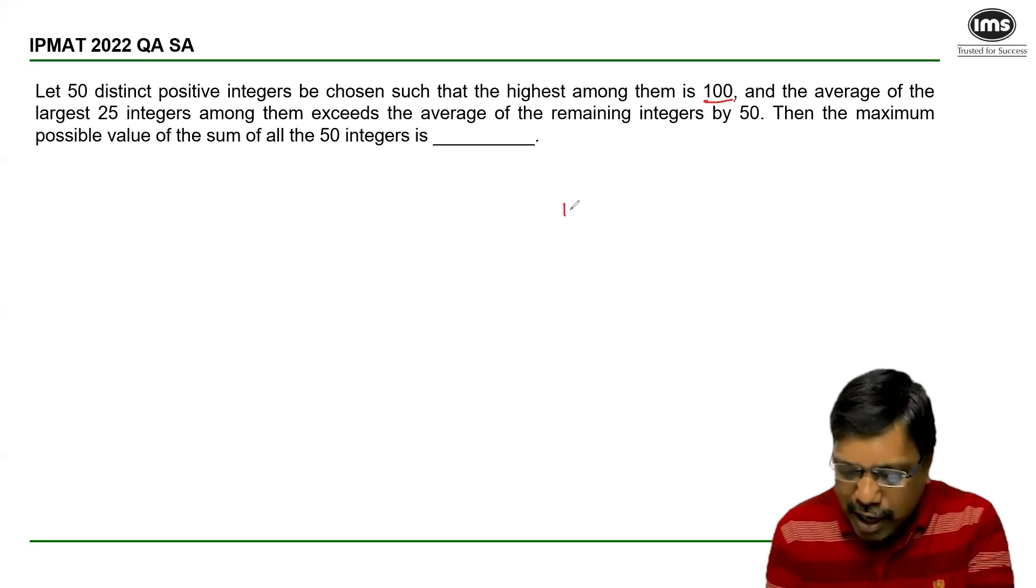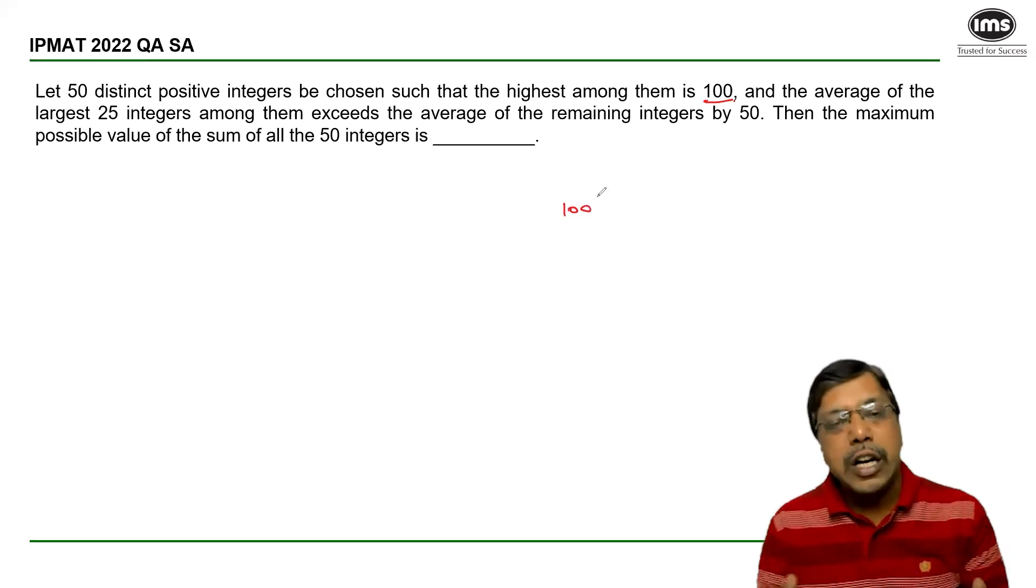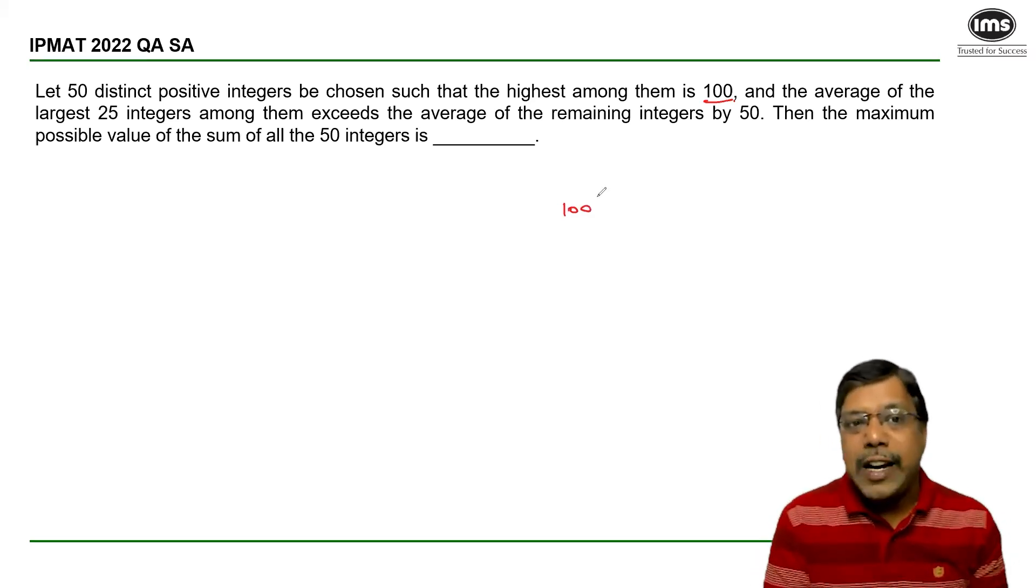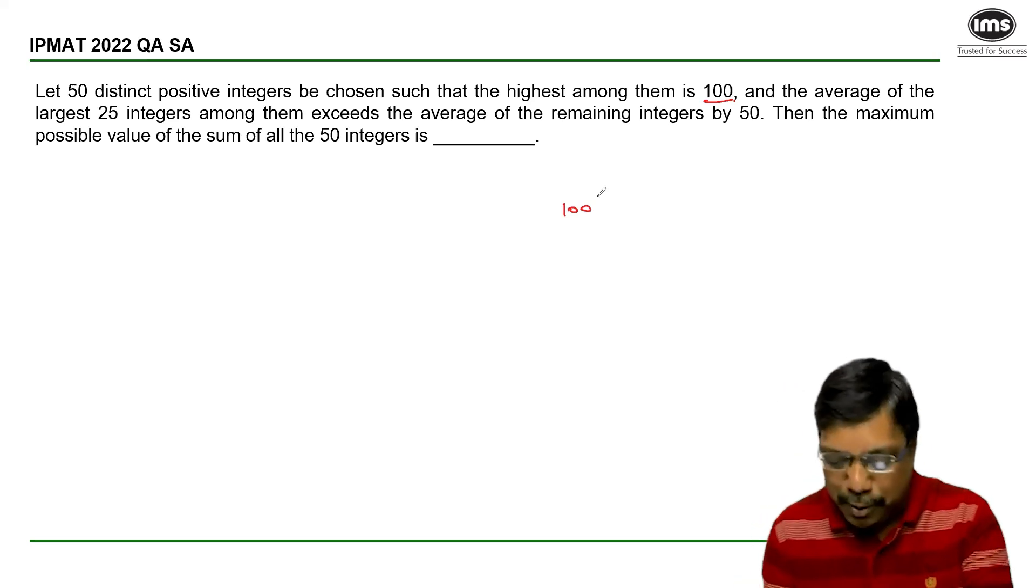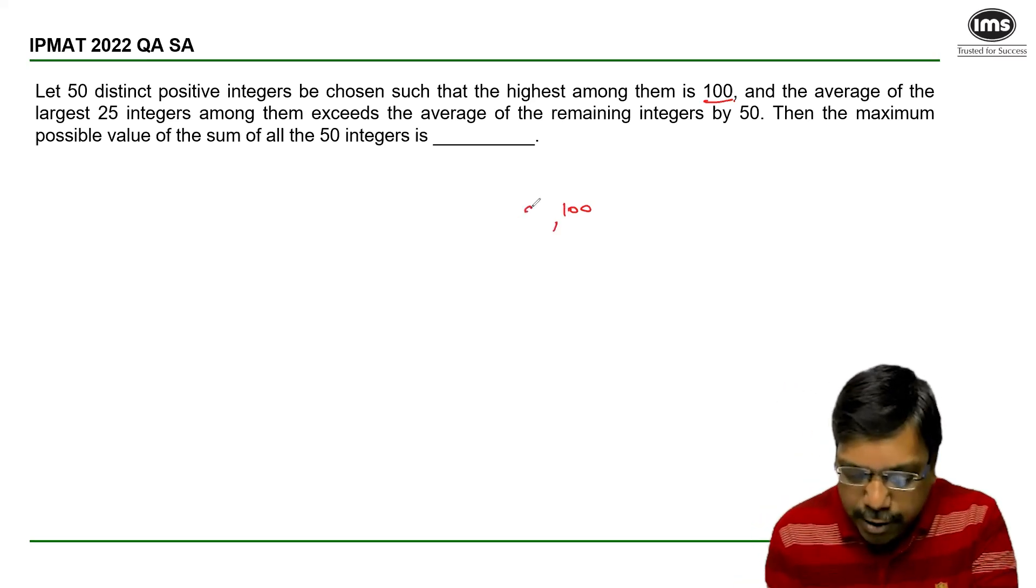So let me start with 100 and work backwards to consider the 25 integers where the highest is 100. So 100, 99, 98, and so on till 76.